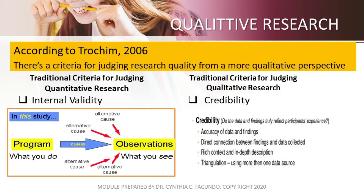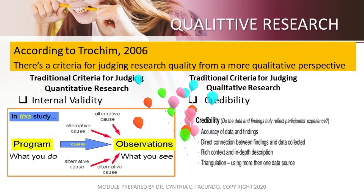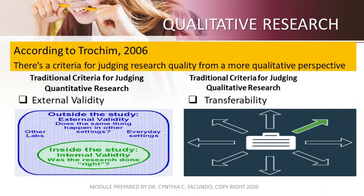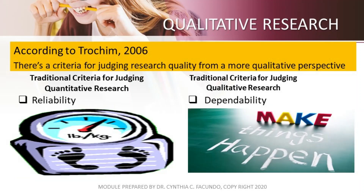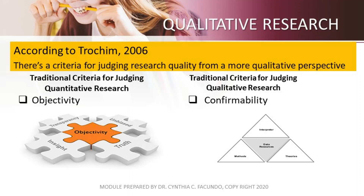Let's see the difference between internal validity of quantitative research and credibility of qualitative research. Let's also see the difference between external validity of quantitative research and transferability of qualitative research, as well as the examples of reliability versus dependability, and objectivity versus confirmability of qualitative research.